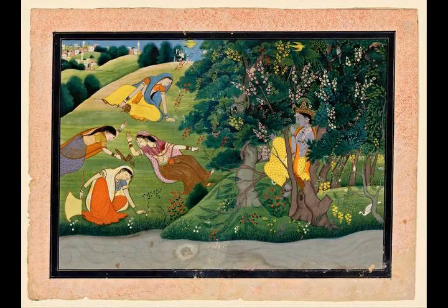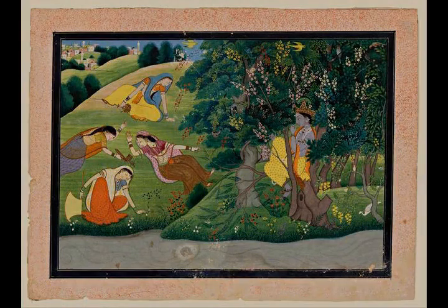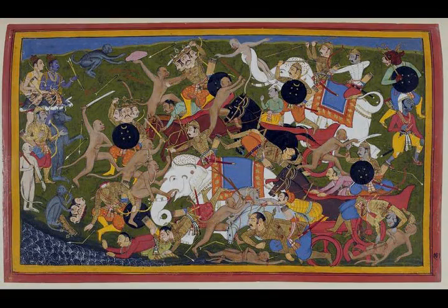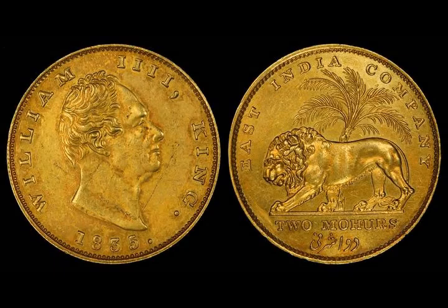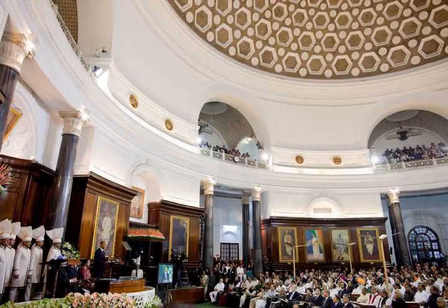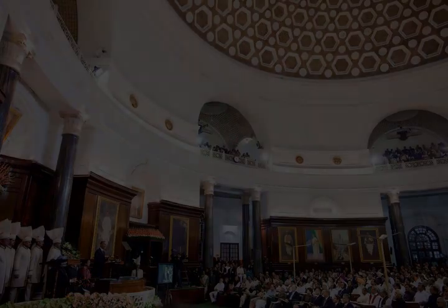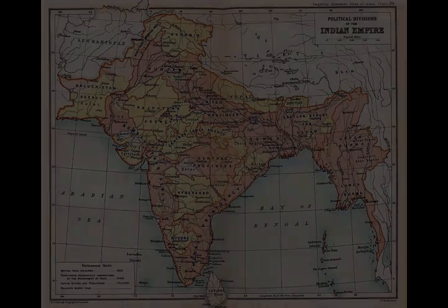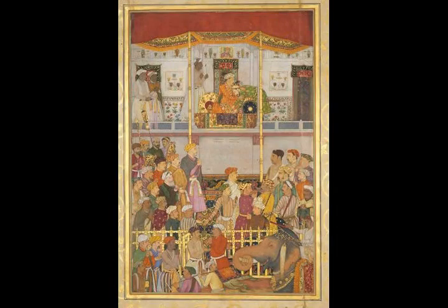India has substantially reduced its rate of poverty, though at the cost of increasing economic inequality. India is a nuclear weapon state which ranks high in military expenditure. It has unresolved disputes over Kashmir with its neighbours, Pakistan and China, since the mid-20th century. Among the socio-economic challenges India faces are gender inequality, child malnutrition, and rising levels of air pollution. India's land is megadiverse, with four biodiversity hotspots, and its forest cover comprises 21.7% of its area. India's wildlife is supported among these forests and in protected habitats.